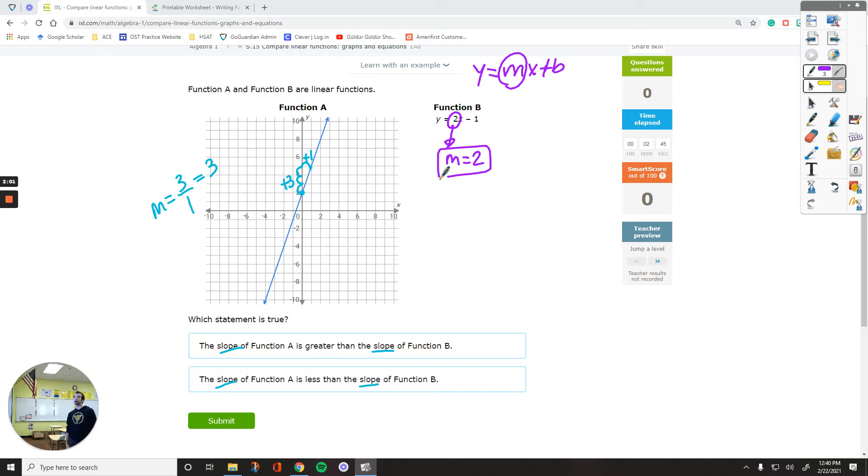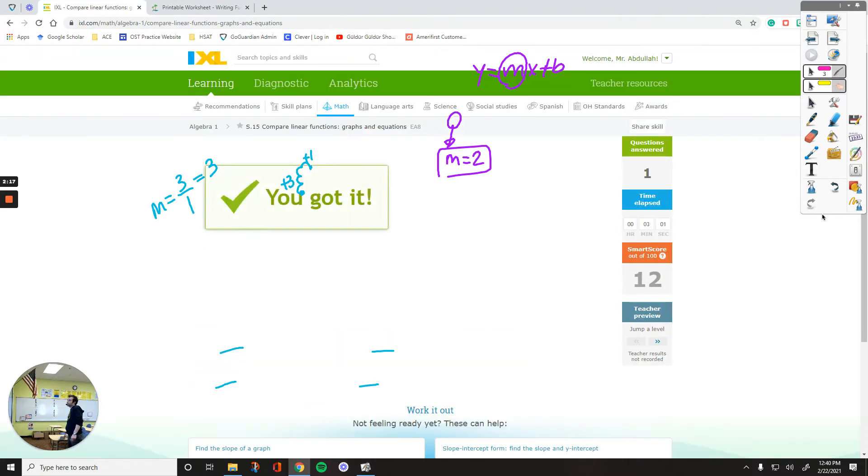Whereas the other slope that belongs to function A was positive three. In that case, function A has a greater slope than function B's slope. That's what I'm looking for in the answers. Slope of A is greater than the slope of B. That's going to be my answer.